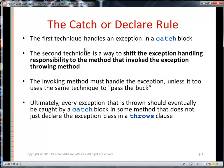So the catch or declare rule. The first technique, like video one, handles an exception in a catch block. The second technique, and the one more widely used, is a way to shift the exception handling responsibility to the method that invoked the exception throwing method. The invoking method must handle the exception, unless it too uses the same technique, and it passes the buck to the method that called it. Ultimately, every exception that is thrown should eventually be caught by a catch block in some method that does not just declare the exception class in a throws clause.